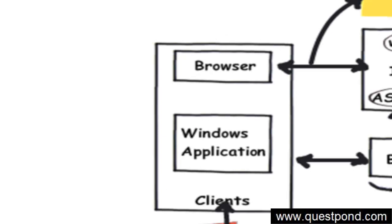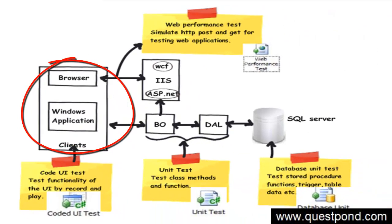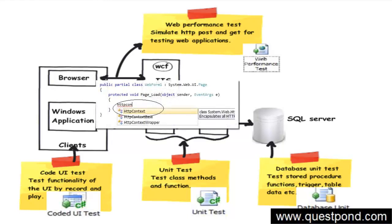The biggest problem with testing user interfaces is the complications involved with the UI technology. Every UI technology has its own way of doing things and it is very difficult to replicate that infrastructure. For example, if you take an ASP.NET application or the ASP.NET behind code, you need to ensure that you create the HTTP object, HTTP context object, response object, the request object, the application objects, and then only you can go and invoke the button clicks of the ASP.NET UI.